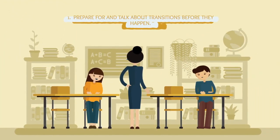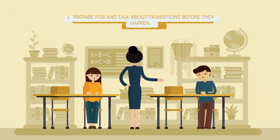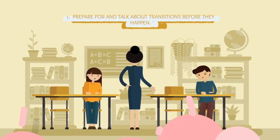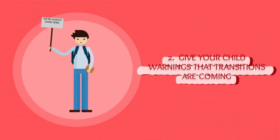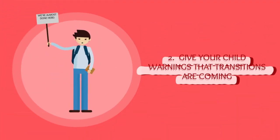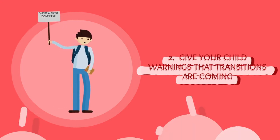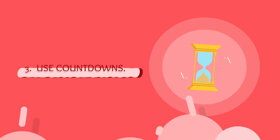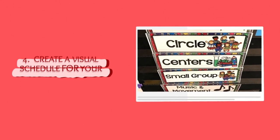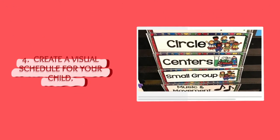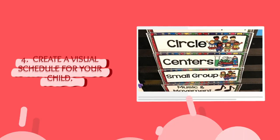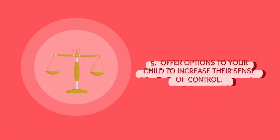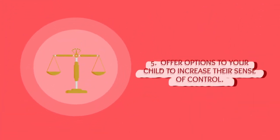1. Prepare for and talk about transitions before they happen. 2. Give your child warnings that transitions are coming. 3. Use countdowns. 4. Create a visual schedule for your child. 5. Offer options to your child to increase their sense of control.